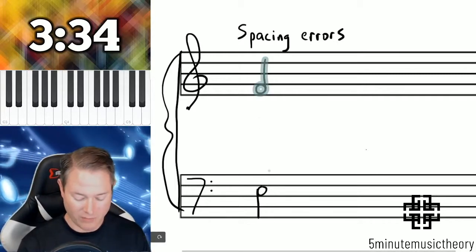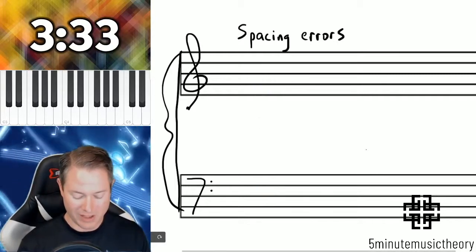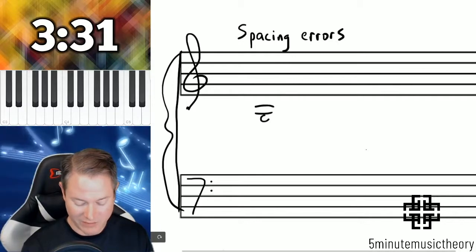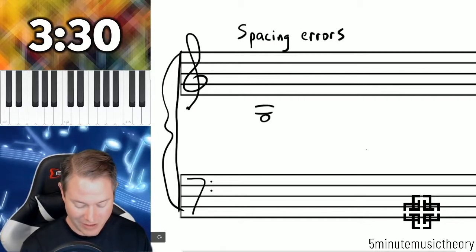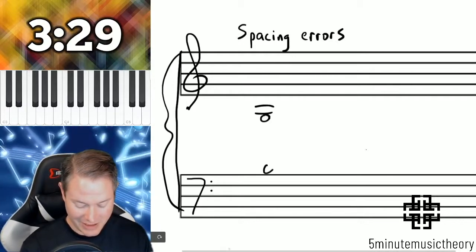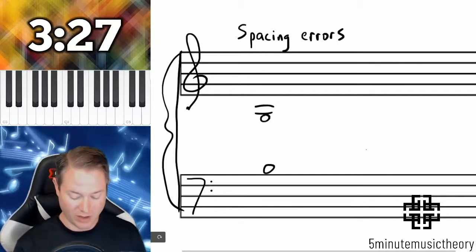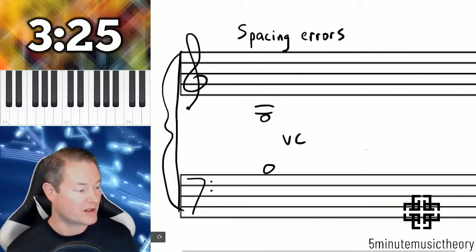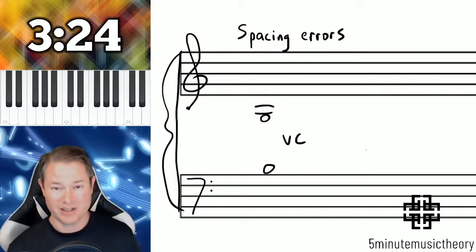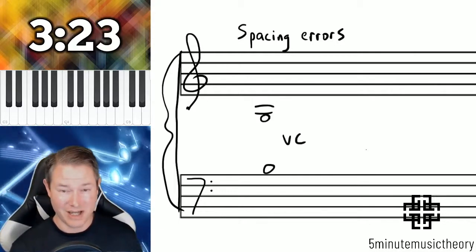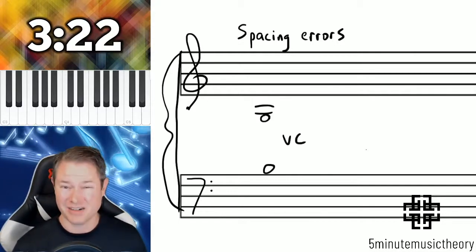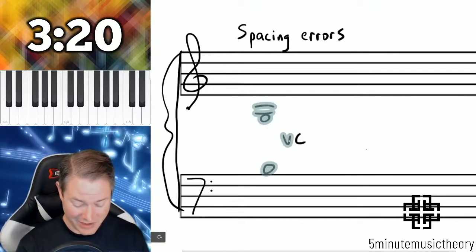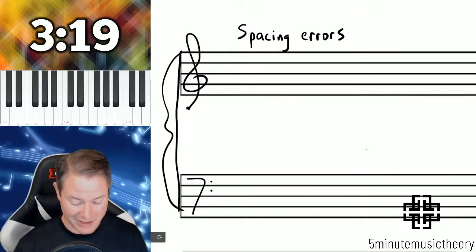Something else to watch out for with the inner voices is voice crossing, which is very hard to see sometimes. This is actually voice crossing here — I'll mark it VC — because the B in the tenor is actually higher than the G in the alto, and that's a common error that I see.